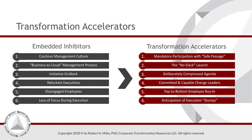As you can see in the opening exhibit for this module, for every inhibitor that can derail or bog down your transformation, there is a corresponding accelerator that you can deploy to keep your transformation on track and on time. Take a moment to read through the list of the embedded inhibitors of rapid transformation on the left and their corresponding accelerators on the right.